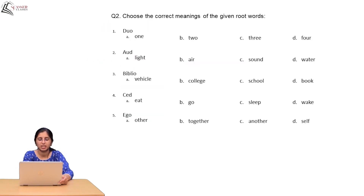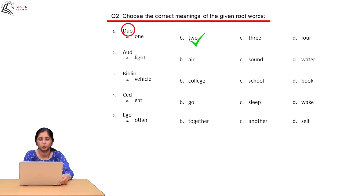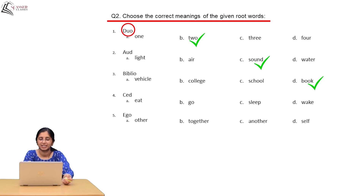The next question: choose the correct meaning of the given root word. The root word 'duo' — duo means two, which is simple. The root 'ode' means sound. Biblio — we just read in the table — biblio means book. The root 'cede' means to go. Ego means self — we just read that in the table as well.